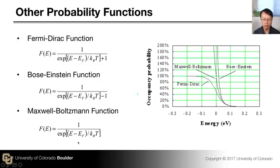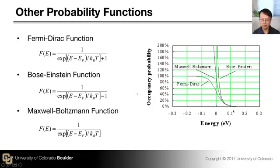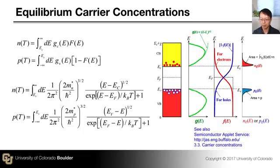The Maxwell-Boltzmann distribution function describes classical particles. If you plot Maxwell-Boltzmann, Bose-Einstein, and Fermi-Dirac all together, you can see that they all converge into a single function for very high energy — that's the classical limit. In semiconductors, we are dealing with fermions — electrons and holes — so we use the Fermi-Dirac distribution function.